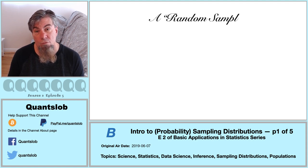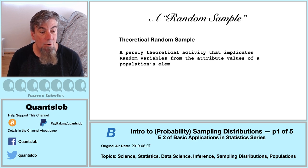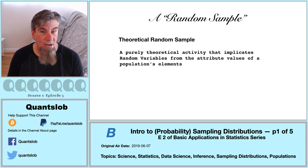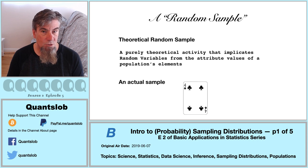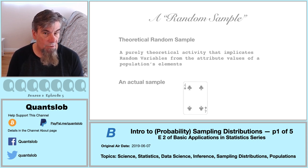A theoretical random sample refers to a purely imaginary activity. It implicates random variables from the fixed attribute values of a population's elements. On the other hand, the term random sample can simply refer to an actual sample — for example, the four of clubs could be a random sample of size one from a standard deck of cards. So let's return to our trusty population of 52 cards.